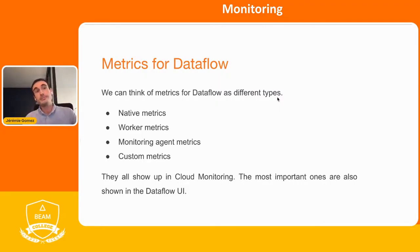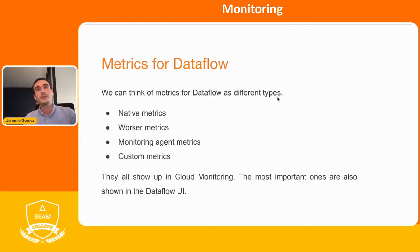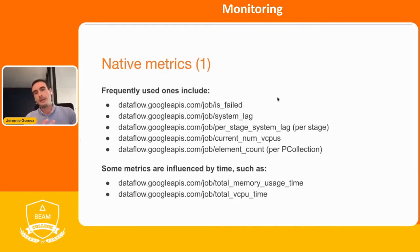Pretty much all these metrics show up in what we call Cloud Monitoring — the product on Google Cloud Platform that enables you to see and handle metrics and alerts. But also the most important metrics for your jobs, you're going to see them in the Dataflow UI. During the presentation, I will show you both: Cloud Monitoring and the Dataflow UI.